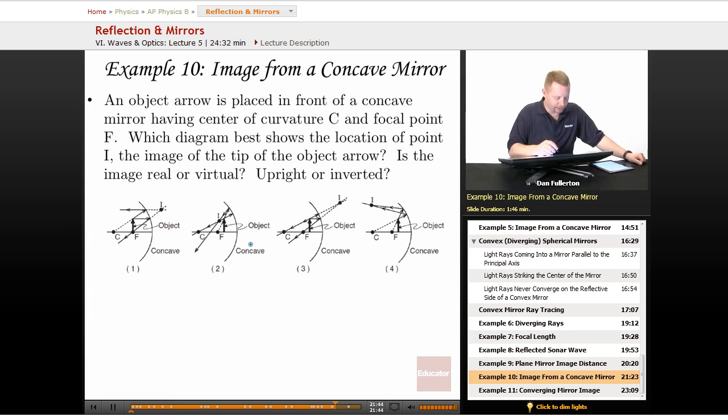Now let's take a look here. In this first one we have the ray parallel to the principal axis coming back through the focal point, and the line from the center of curvature coming back that way. But I don't think that's gonna work. Let's take a look. We've got a line from the center of curvature going through here in parallel. That's not how that works. Can't be one. Or number two, the line from the focal point through the object and then back off the mirror. That's not right.